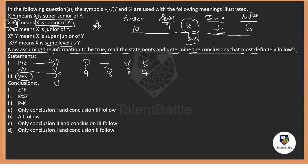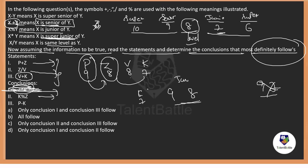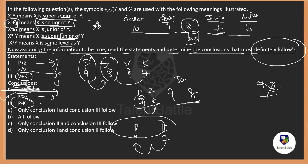Checking the conclusions: Conclusion 1 — Z is super junior of P: Z = 8, P = 9 — that makes Z just junior, not super junior (super junior would need a gap of 2). Wrong. Conclusion 2 — K % Z means K is junior of Z: K = 7, Z = 8 — yes, correct. Conclusion 3 — P − K means P is super senior of K: P = 9, K = 7 — gap of 2, so super senior is correct.